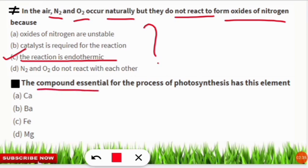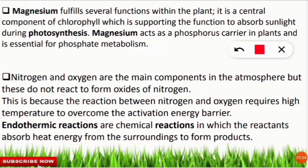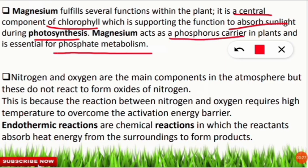The next question: which element is essential for the process of photosynthesis in plants? The correct option is D — magnesium. Magnesium fulfills several functions within the plant body. It is the central component of chlorophyll, which is responsible for photosynthesis, as it supports the absorption of sunlight to produce chemical energy. Magnesium also acts as a phosphorus carrier and is essential for phosphate metabolism in the plant.